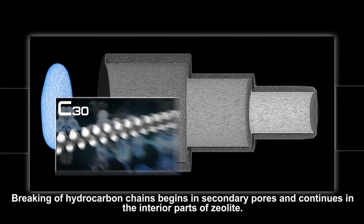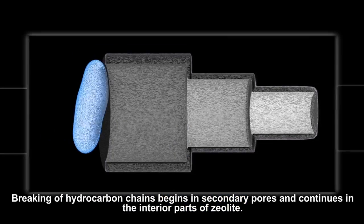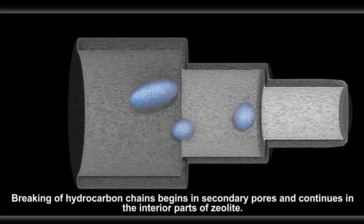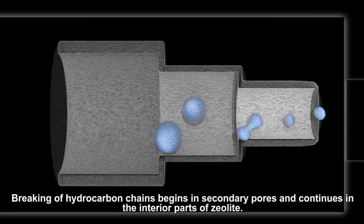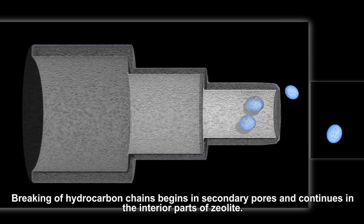The breaking of hydrocarbon chains begins in secondary pores and continues in the interior parts of the zeolite.